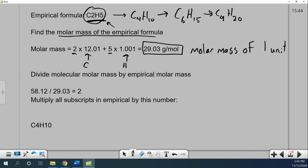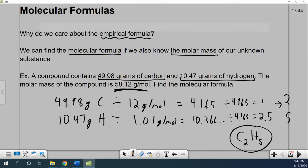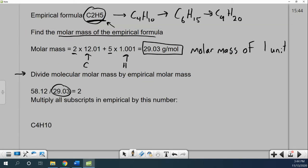How many C2H5s do I have? So to do that, to find out how many C2H5s, I divide the molar mass of the whole compound by the unit mass. So I was told 58.12 grams per mole is my actual molar mass. And I know each unit is 29.03. So I divide those two. That tells me how many units I have.